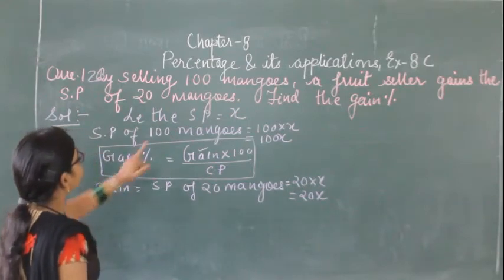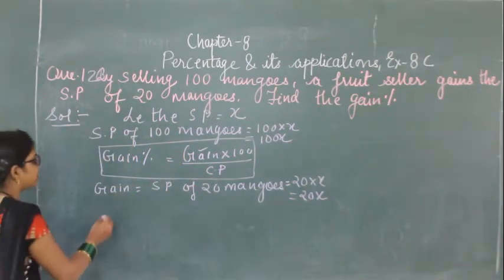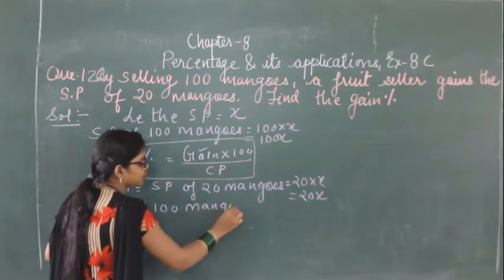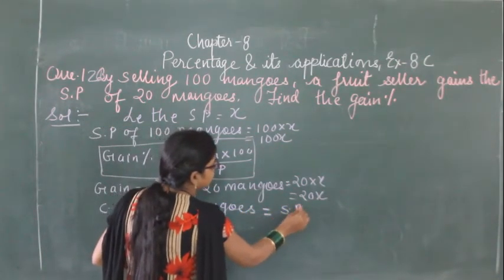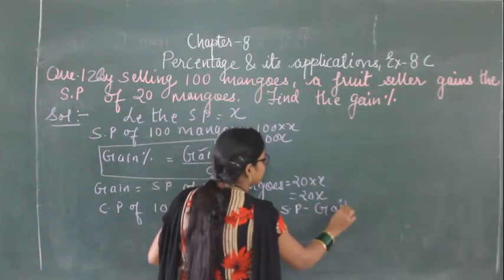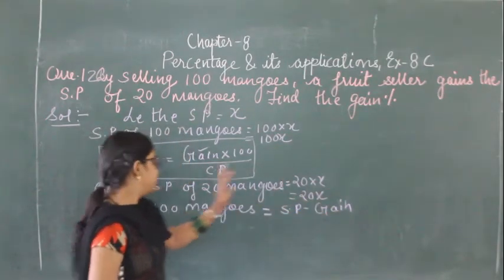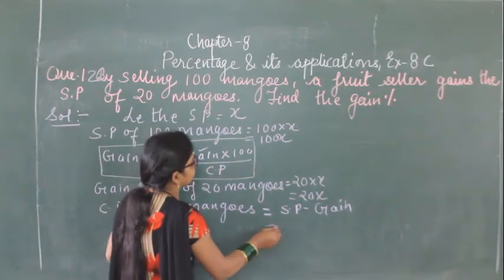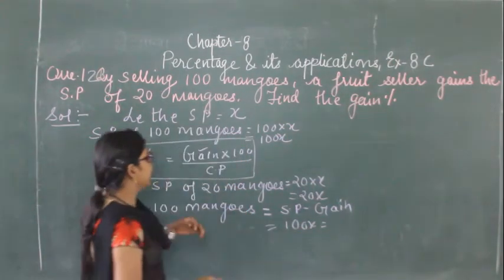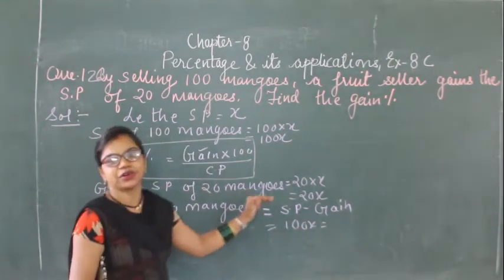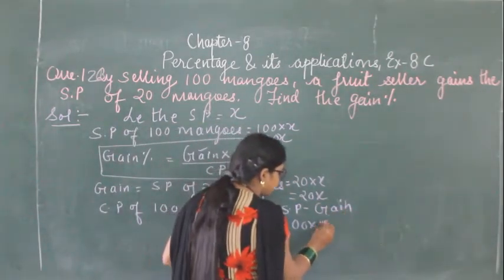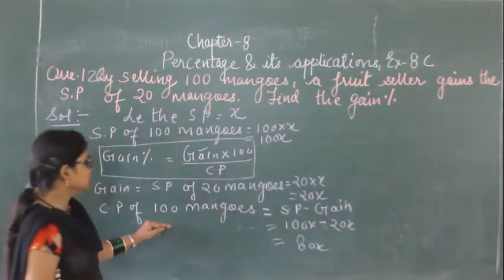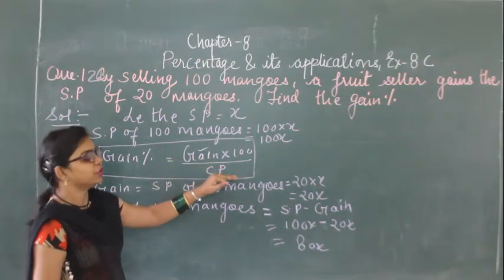Now we need to find the cost price. Cost price of 100 mangoes equals selling price minus gain. The selling price of 100 mangoes is 100X and the gain is 20X. So cost price equals 100X minus 20X, which gives us 80X.